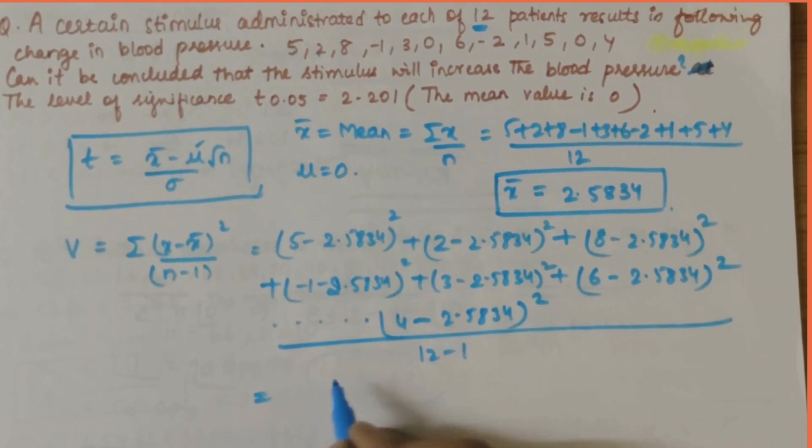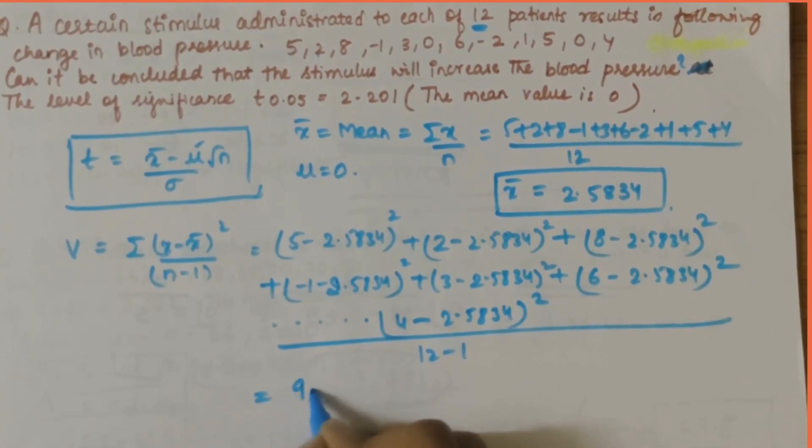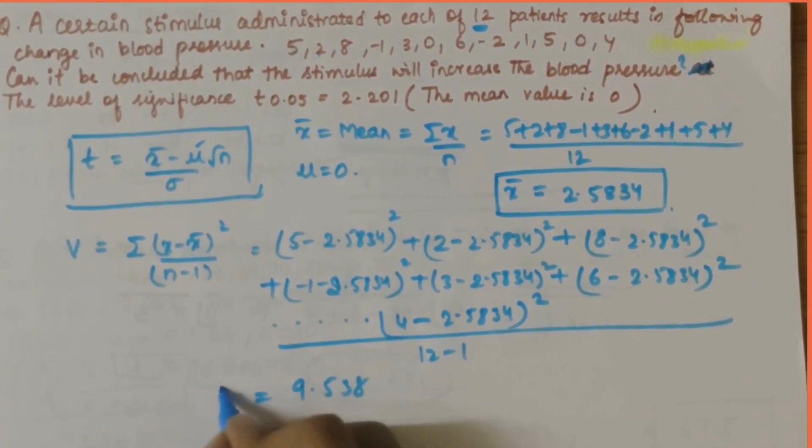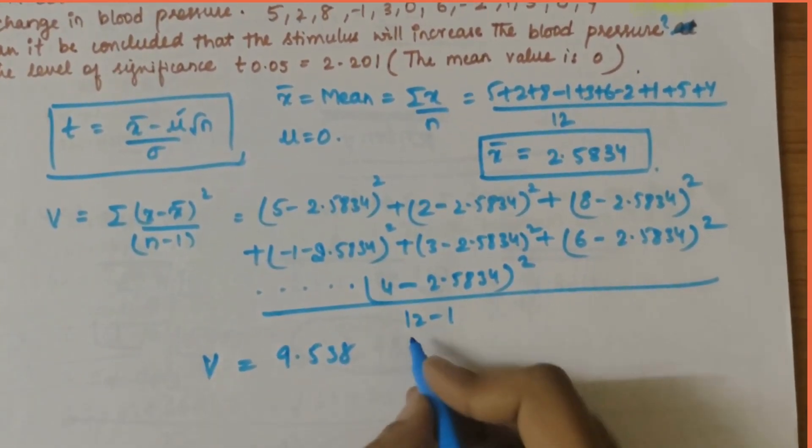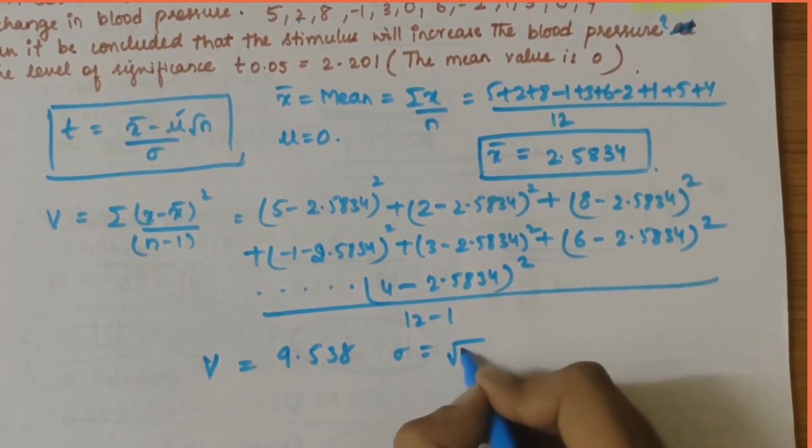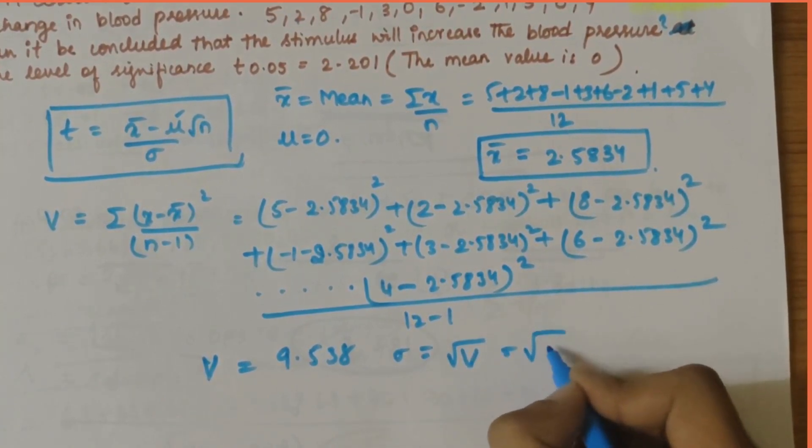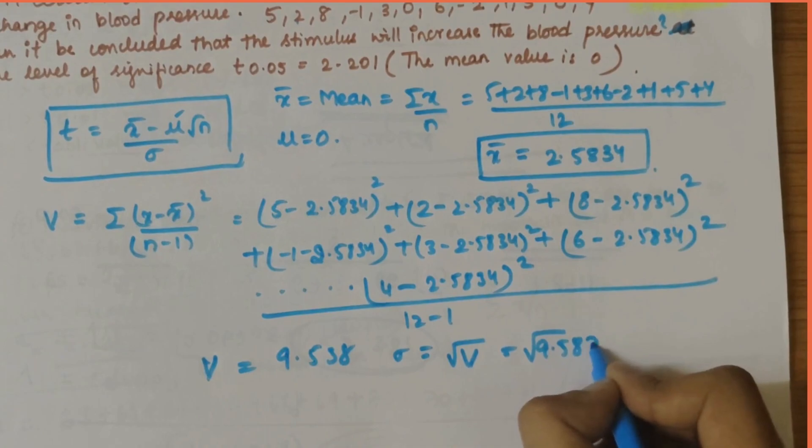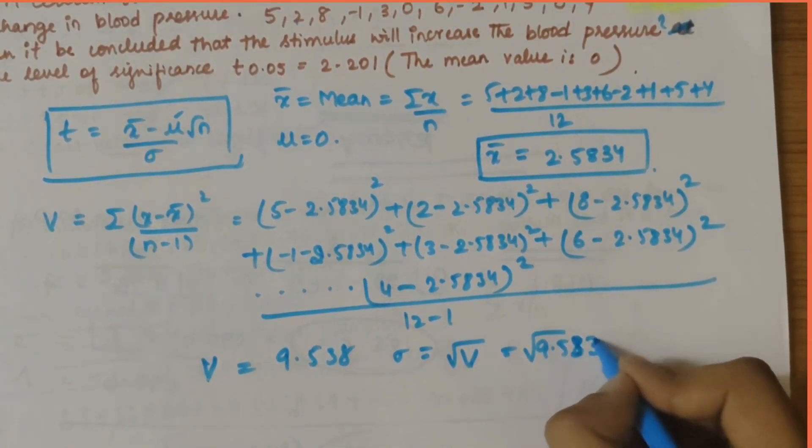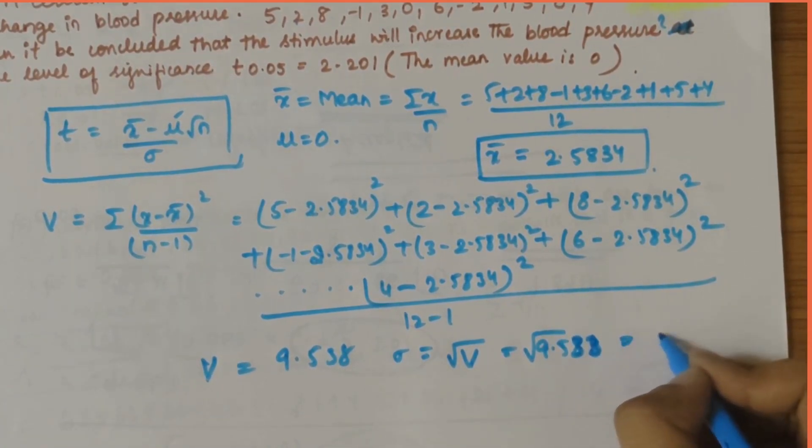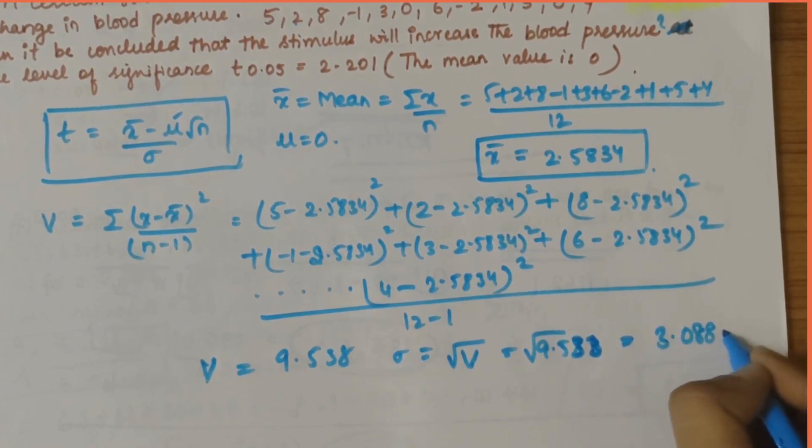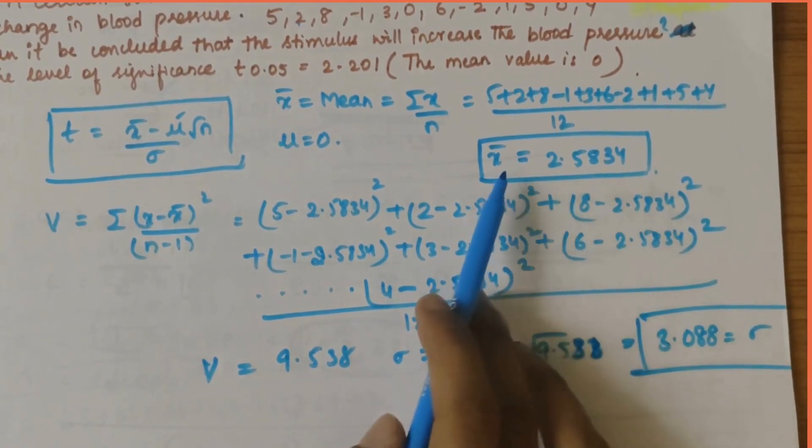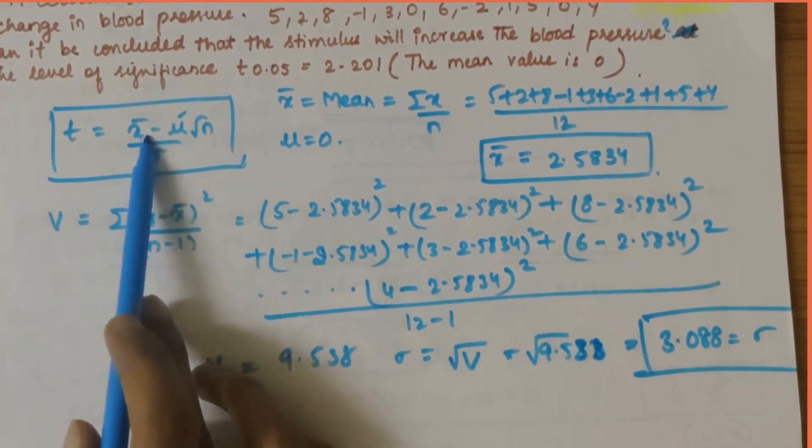If you solve this you get the value as 9.538. V value is 9.538. Then the sigma value, that is standard deviation, would be under root of v, that is under root of 9.538, which results in 3.088. We have calculated x bar and sigma.